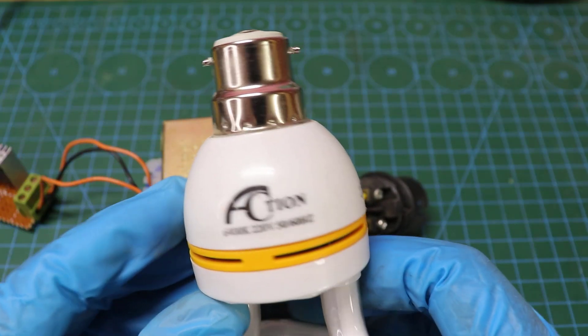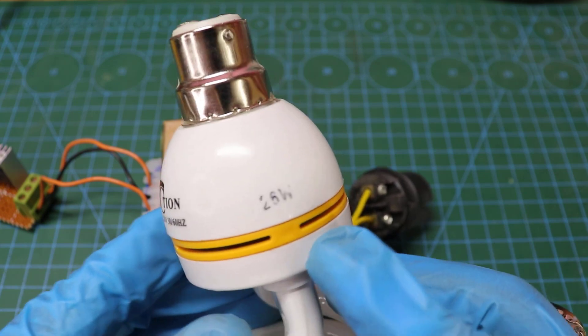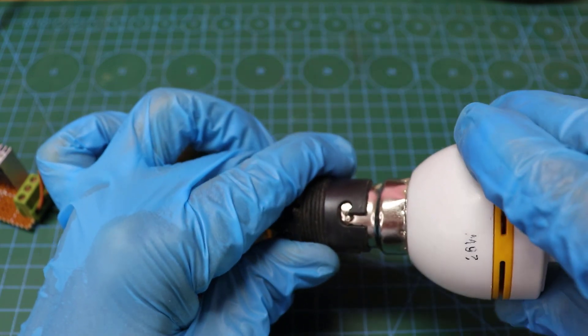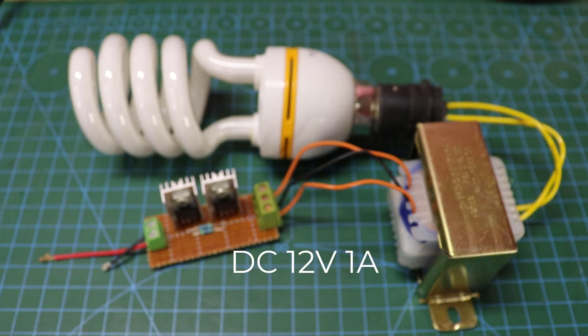CFL lamp 220 volt 25 watt. Input DC 12 volt. Watch out, the 220 volt output.